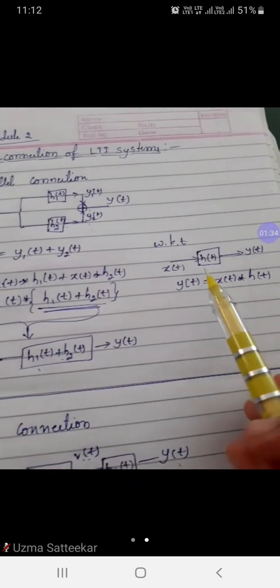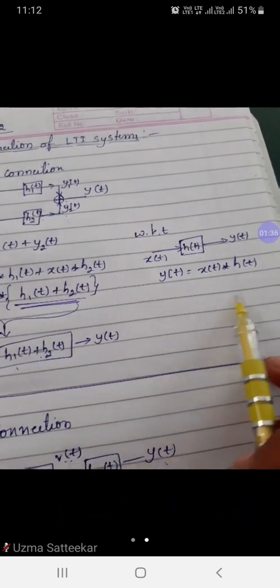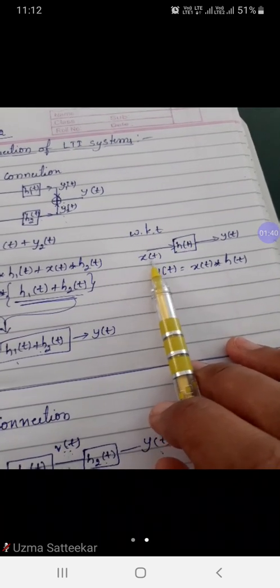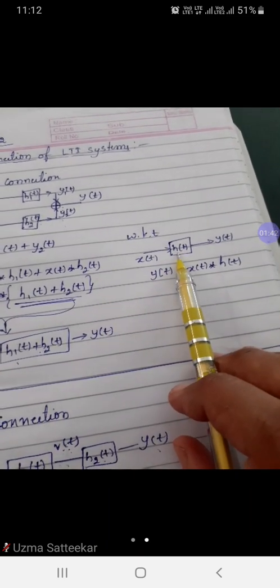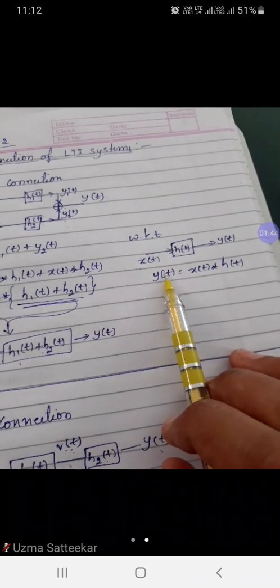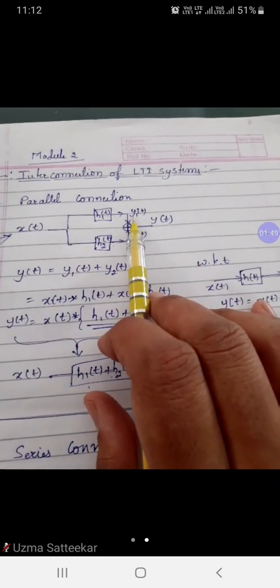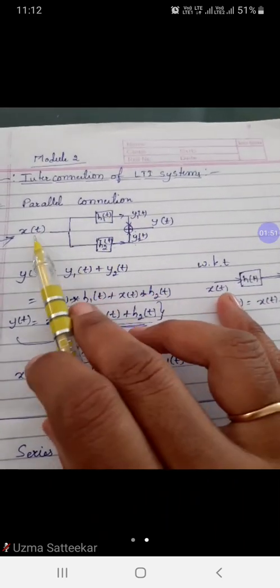Just like in the general LTI system definition: if x is the input, y is the output, and h is the impulse response, then y is given by the convolution of these two signals. Likewise, this output is given by the convolution of these two signals.